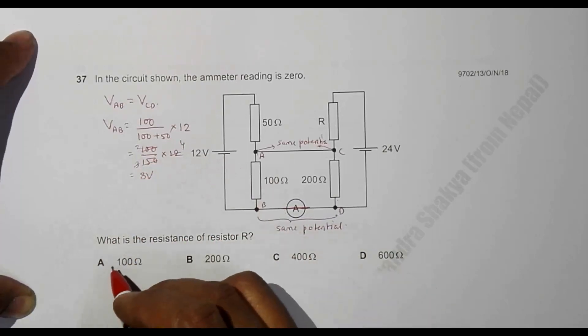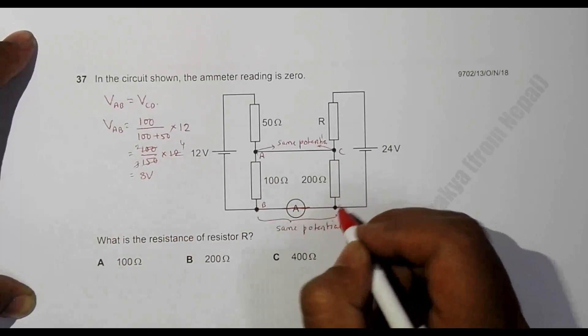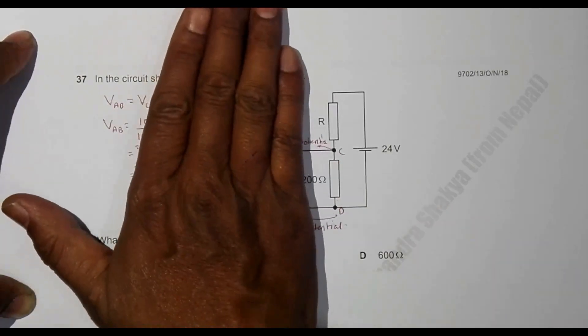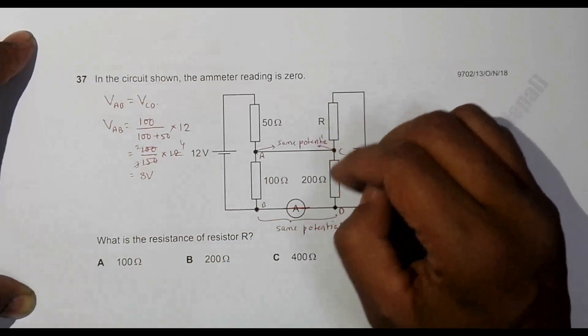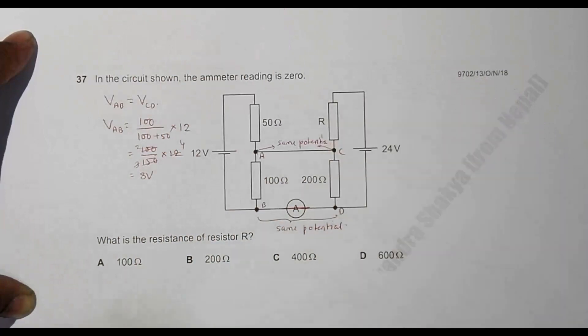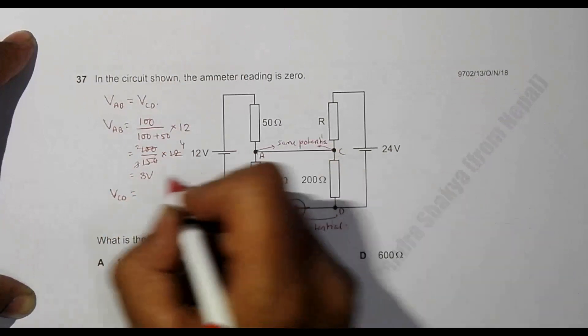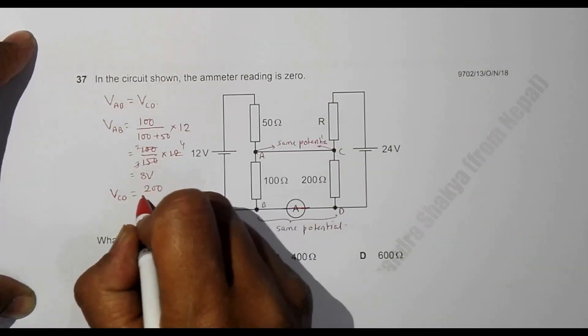In a similar manner, the PD here, VCD, should be equal to—these two form a voltage divider circuit—and VCD will be equal to this resistance, which is 200, divided by the total here, which is 200 plus R, into the EMF, which is 24.